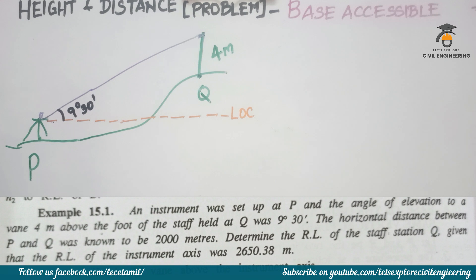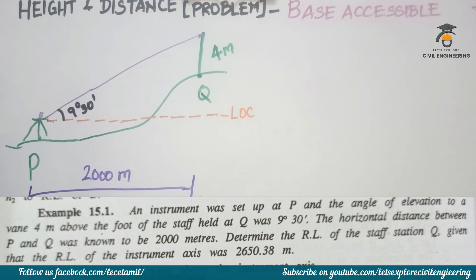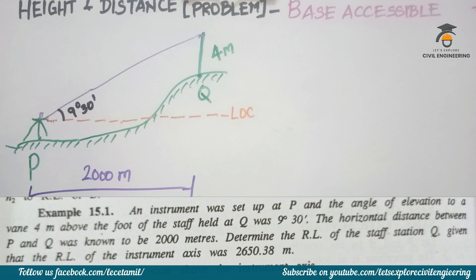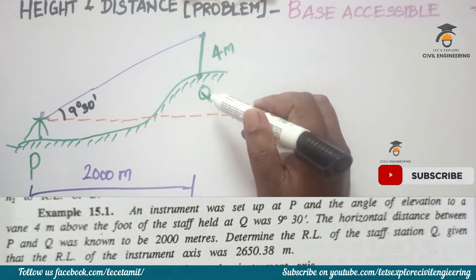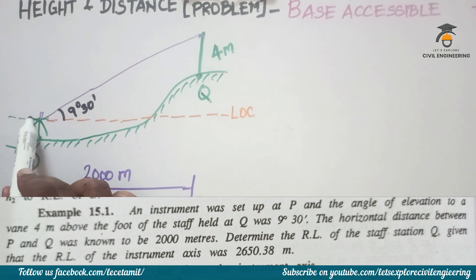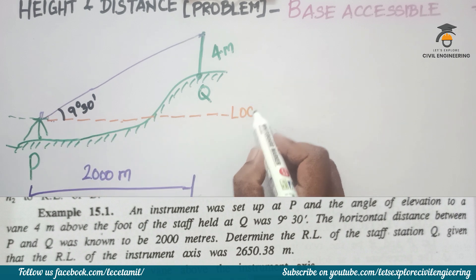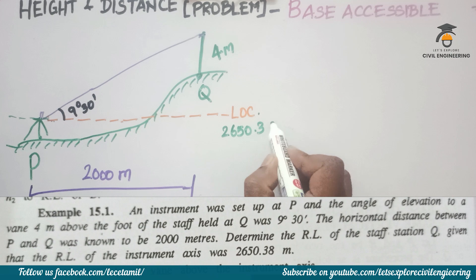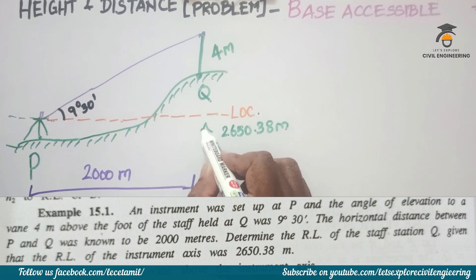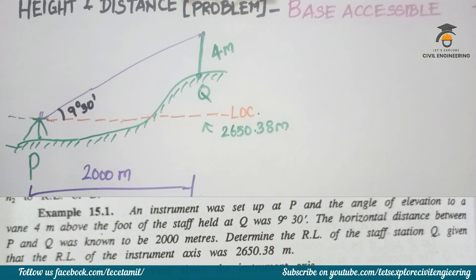The distance between P and Q is 2000 meters. This is the horizontal distance. The inclined distance is also considered. We need to determine the reduced level of staff station Q. The RL of the instrument axis is 2650.38 meters. The line of collimation height is also 2650.38 meters.